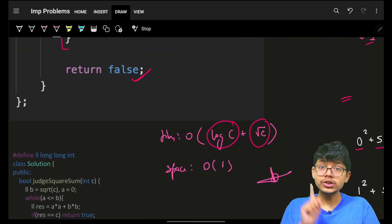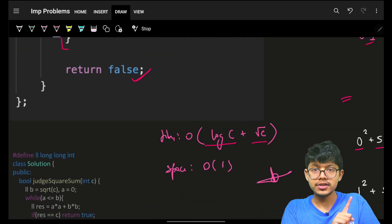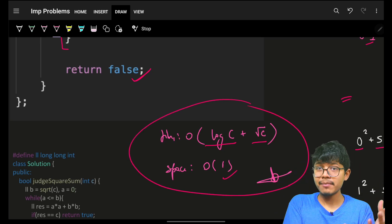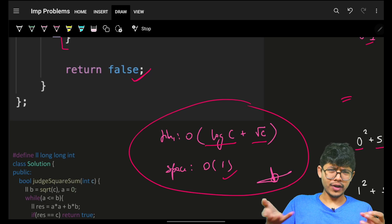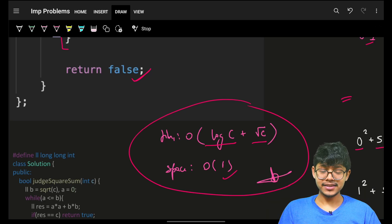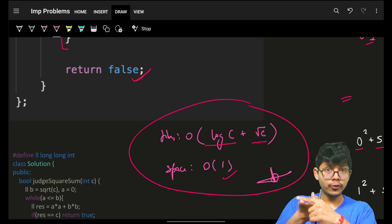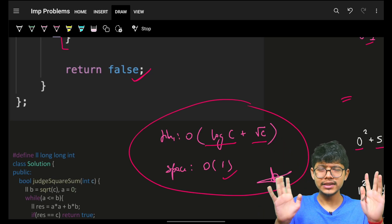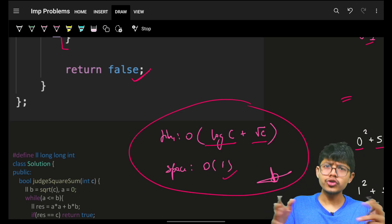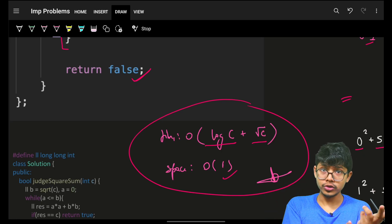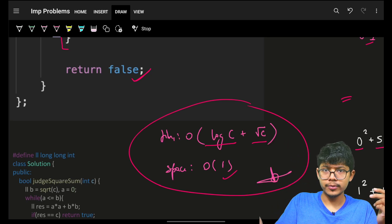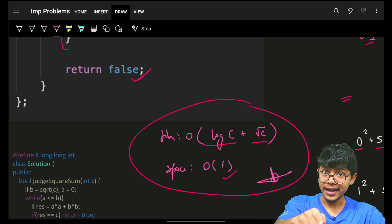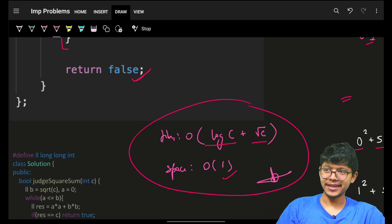The most optimal approach is the two-pointer approach: O(√c + log c), space O(1). To summarize: brute force is O(c); optimized with square root check or binary search is O(√c · log c); two-pointer is O(√c + log c). All three approaches were covered — brute force, hash map/square root approach, and the two-pointer approach.